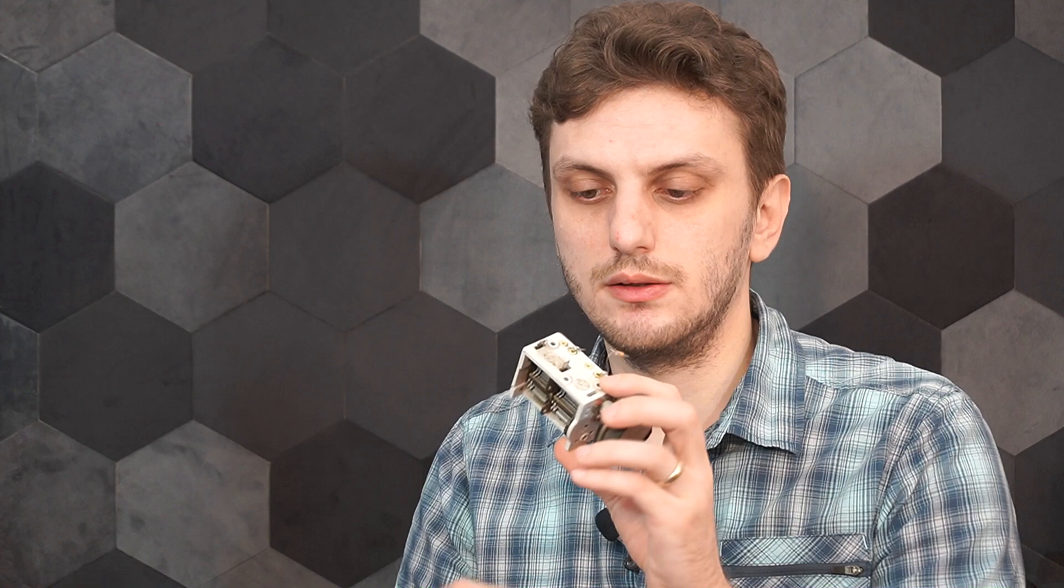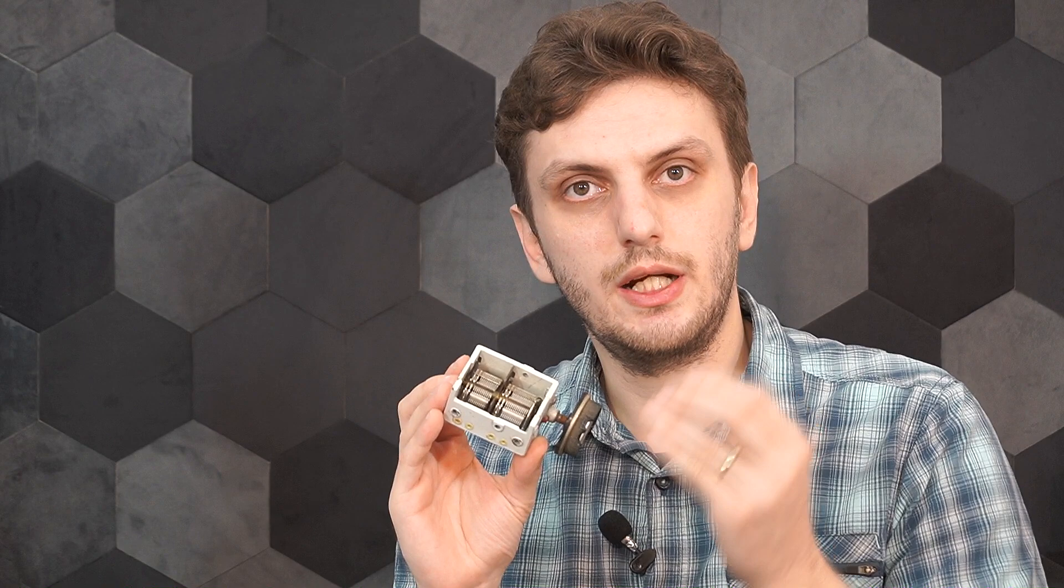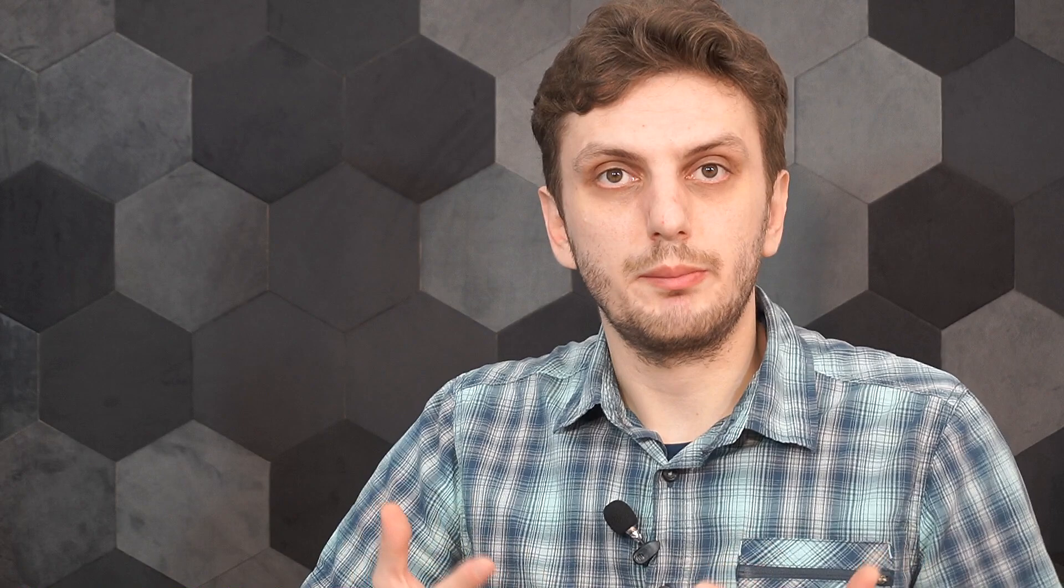So for example, with the classical variable capacitor, dielectric is air, that doesn't change, the distance in between the plates is fixed, but what you can change is the area of contact in between the plates. So by varying the capacitor, you reduce the area and therefore reduce the capacity.